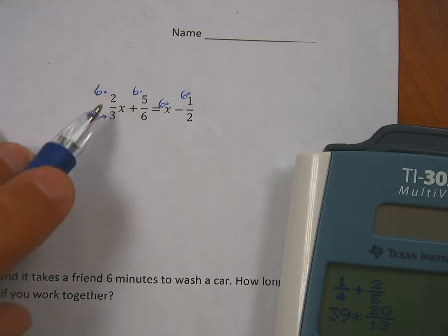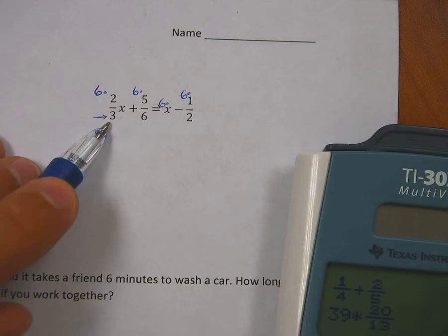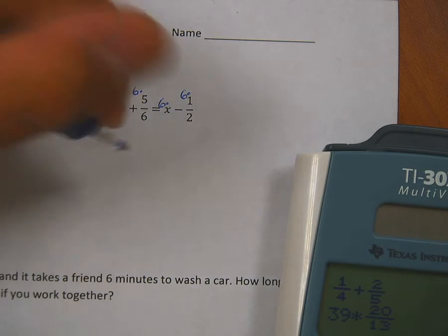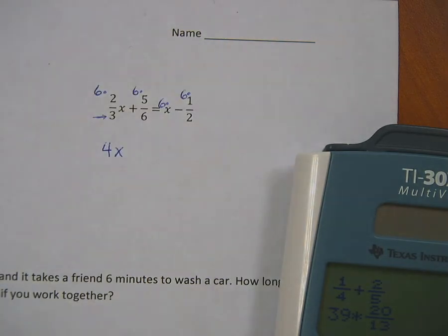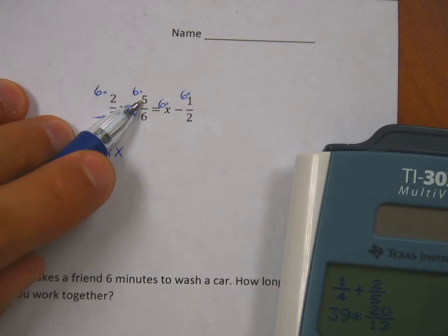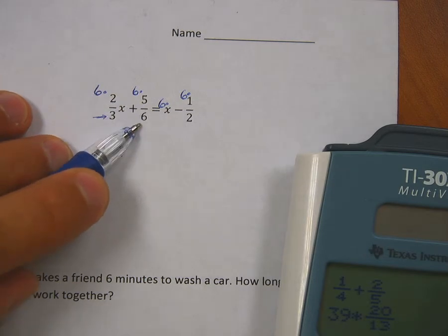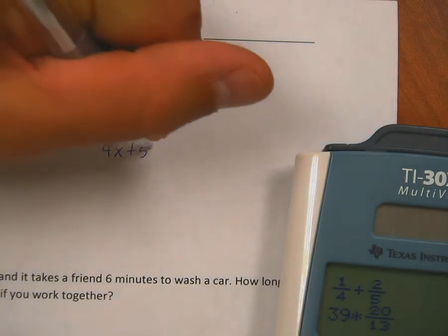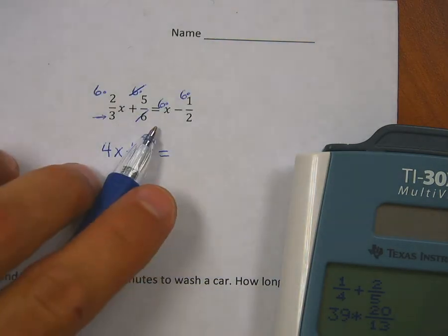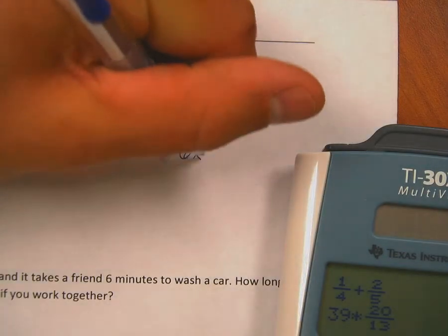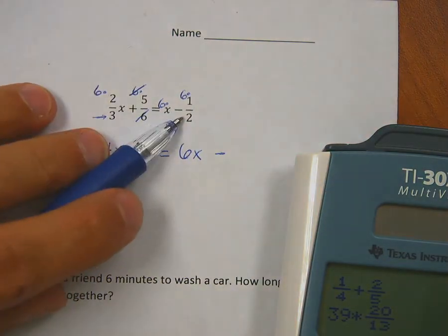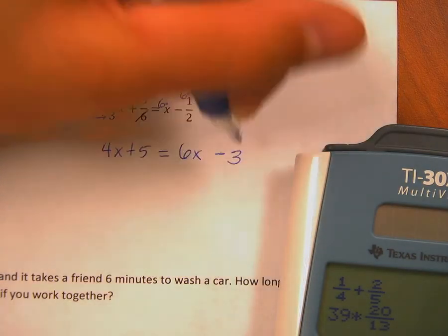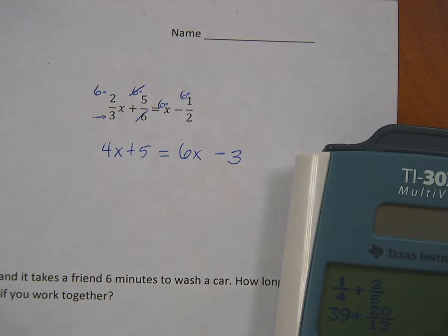Because if I do that, if I take 6 times 2/3, that's the same thing as 6 times 2, which is 12 divided by 3, which is 4. I really have 4x's over here. If I took 6 times 5, that's 30 divided by 6, back to 5. The 6 on top and the 6 on bottom went away, right? So I got 4x plus 5 equals 6 times x, minus and then half of 6, which is 3, 6 divided by 2. And now I've got something with no fractions.